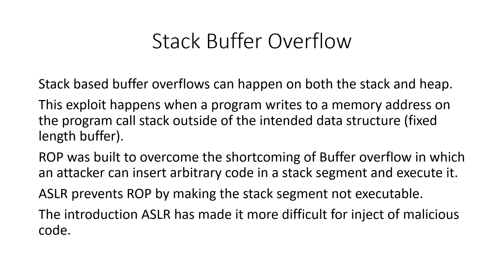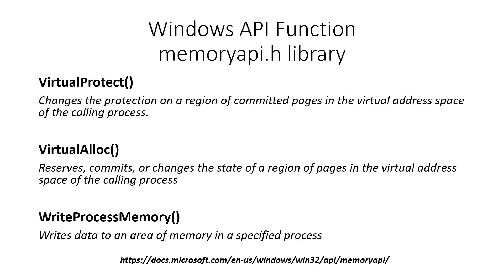The introduction of address space layout randomization has made injection of malicious code more difficult. On a Windows system, there are many API functions that make ROP exploits very possible.